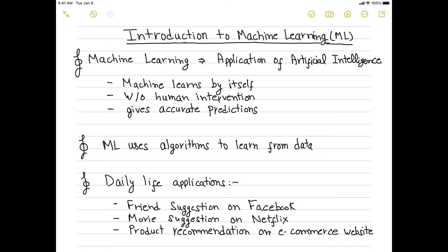Welcome to Data is Easy. Today we are going to look into the introduction of machine learning. Machine learning is an application of artificial intelligence where the machine learns by itself without any human intervention in order to give accurate predictions. Human intervention is basically only required to define the problem statement, decide upon the dependent variables, and provide data to the machine. ML uses algorithms to learn from data in order to give predictions.